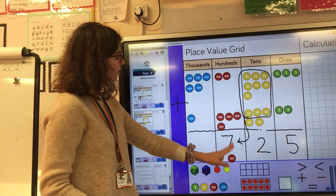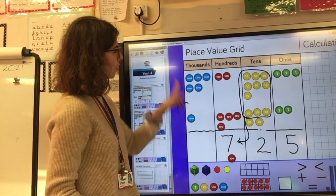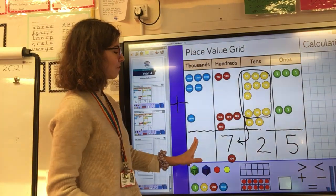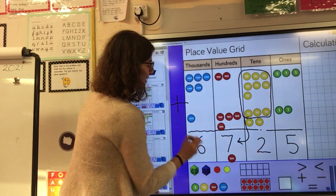I haven't had to exchange anything there so I can move straight on to my thousands column. I've got five thousands plus one thousand. That will add up to give me a total of six thousand.